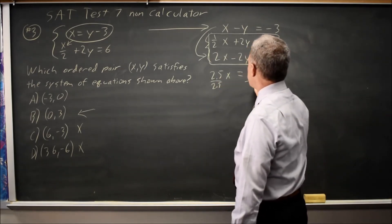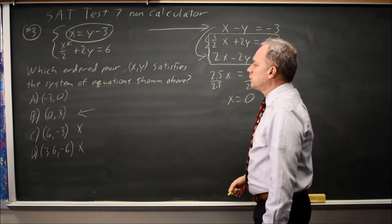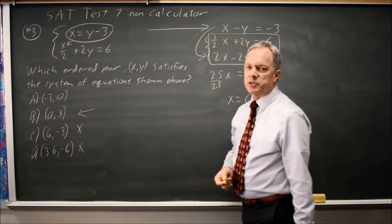Divide by 2.5. Although we may have seen it already, x equals 0. Choice B is the only choice in which x equals 0, so that must be the correct answer.